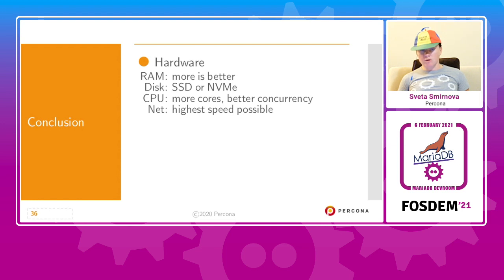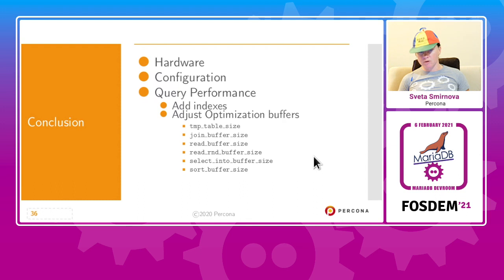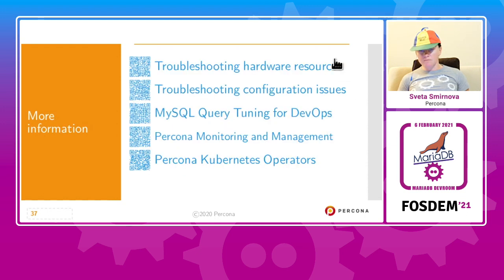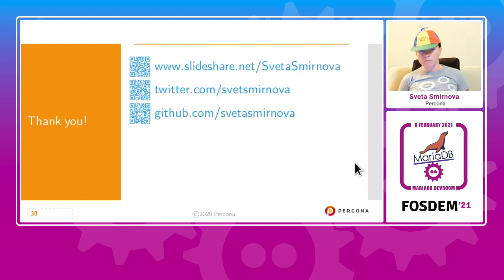In conclusion: more RAM is better; do not use spinning disks; more cores means better concurrency; use the highest network speed possible. These are configuration options you can change for better performance, and these are optimization configuration buffers you can also change. Here are links to three webinars and a Percona University talk on MySQL query tuning, DevOps, and hardware resources if you want to learn more. There are also links to Percona Monitoring and Management and Percona Kubernetes Operators mentioned in this talk. Thank you very much.